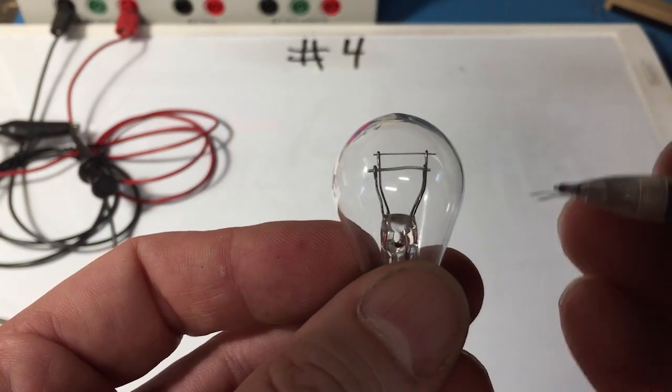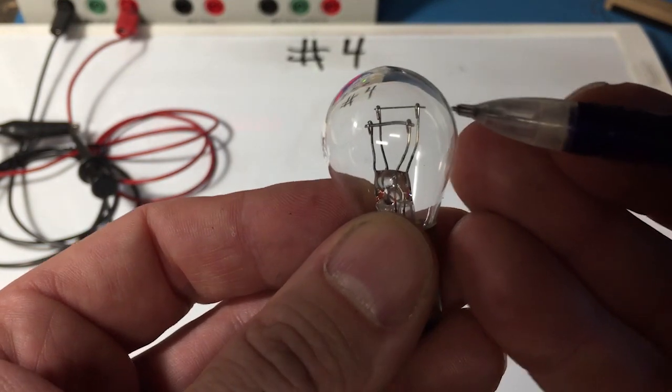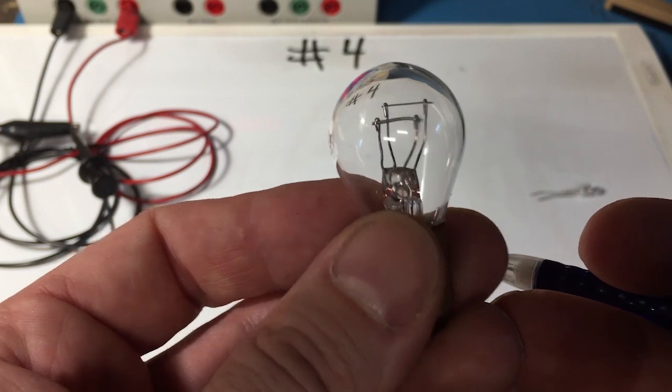The cool thing about this light bulb though is notice it has two filaments in there. It's a dual filament light bulb. One of the filaments is the tail light on the car and the second filament is the brake light.